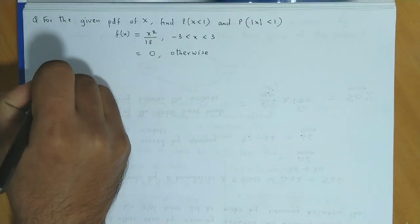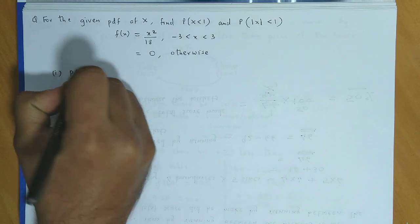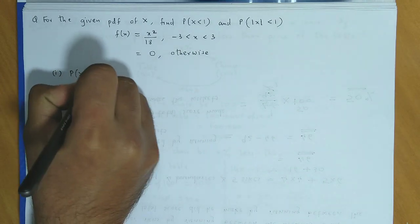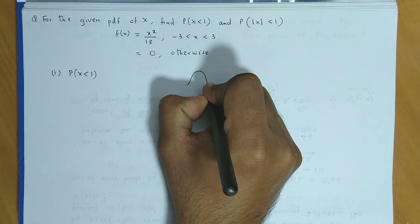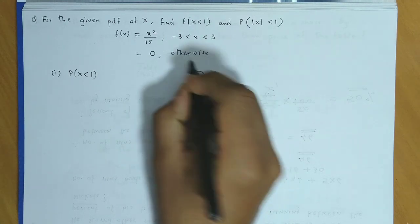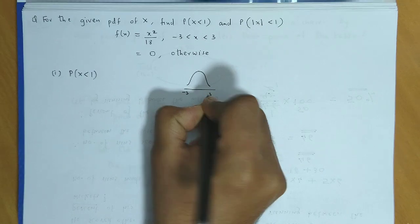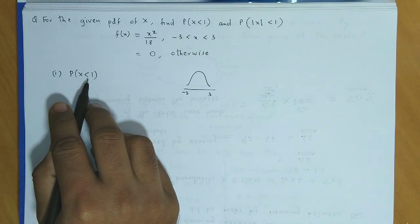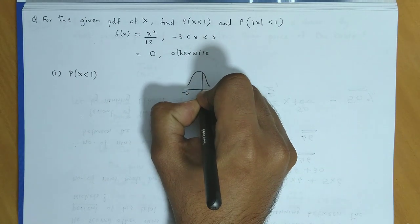Let's consider the first case. We have to find probability for X less than 1. The probability distribution is continuous, usually a bell shaped curve. This extends from minus 3 to 3. We have to find probability for X less than 1. Suppose 1 is somewhere here.